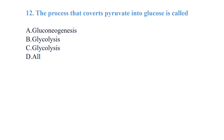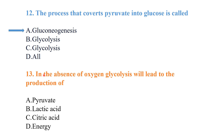Question number 12: the process that converts pyruvate into glucose is called gluconeogenesis — this is from the metabolism of carbohydrates. Question number 13 involves a process that will produce lactic acid.